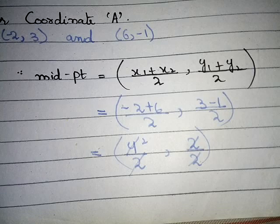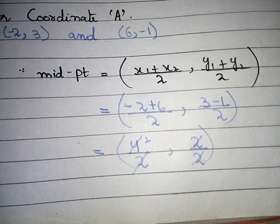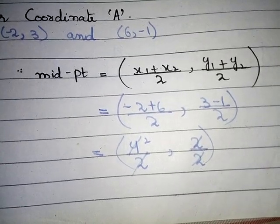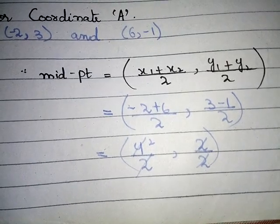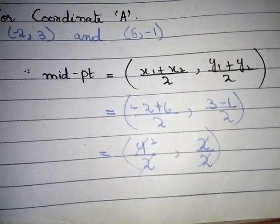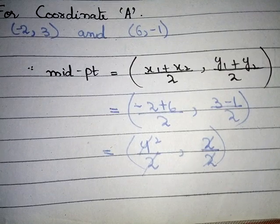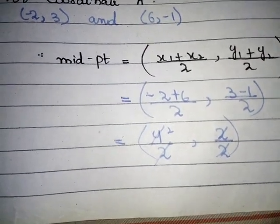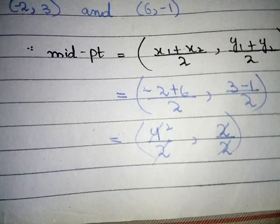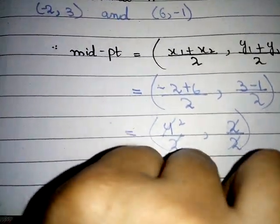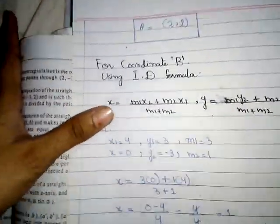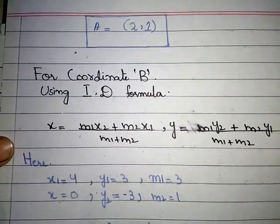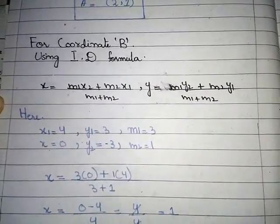x1 is -2 and x2 is 6, so (-2 + 6)/2 = 4/2 = 2. y1 is 3 and y2 is -1, so (3 - 1)/2 = 2/2 = 1. The 2s cancel. So the coordinate of A is (2, 1).